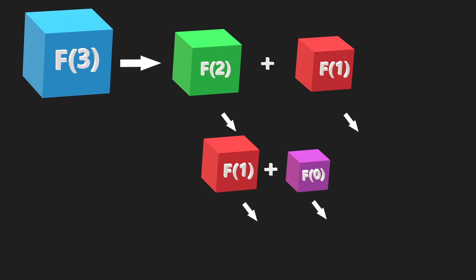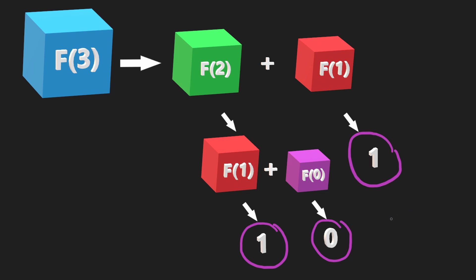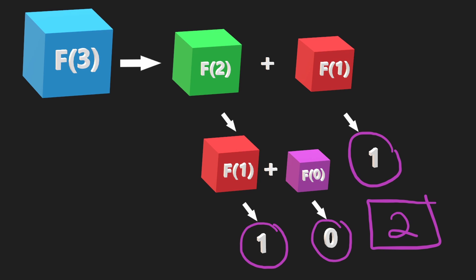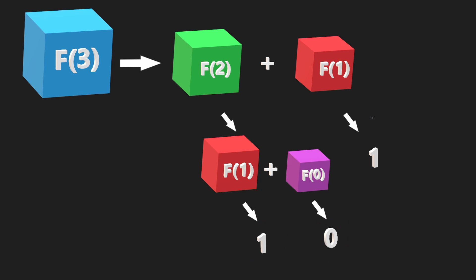Opening the first Fibonacci number box, we finally get something that's not a box — a number: one. That makes sense because the first Fibonacci number is one. Opening the other box labeled first Fibonacci number also gives us one, and the zeroth box gives us zero. Now that we've opened all the boxes, we add up all the numbers: one plus zero plus one equals two, which is the correct third Fibonacci number.